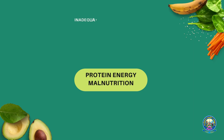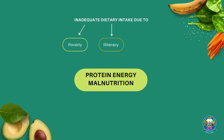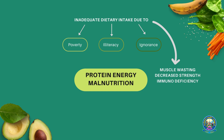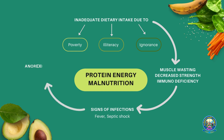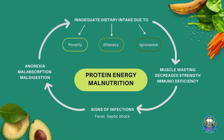Now we will see an example of protein energy malnutrition correlating both the vicious cycle and ecological factors. Inadequate dietary intake due to poverty, illiteracy and ignorance leads to muscle wasting, decreased strength and immunodeficiency. These cause signs of infection such as fever and septic shock, which lead to anorexia, malabsorption and maldigestion. These in turn cause inadequate dietary intake, and the cycle repeats.